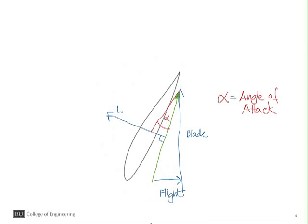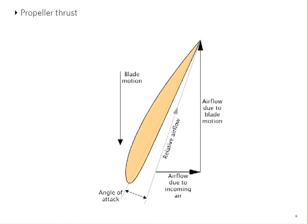Let's look at this sketch more organized. Here we have blade motion going down and the airflow due to the blade motion going up. We have the plane going from right to left, and so the airflow due to the incoming air is from left to right. The vector sum of these two is relative wind.